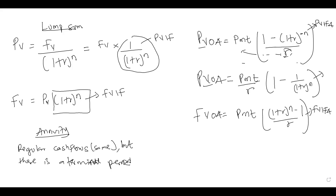Ordinarily, annuity payments are received at the end of the period. But if annuity payments, for whatever reason, are received at the beginning of the period, we call it annuity due. So ordinarily payments come at end of period; if they come at the beginning, that is annuity due.